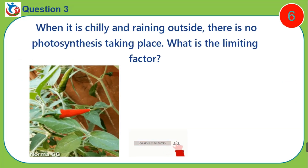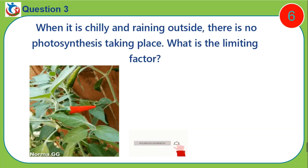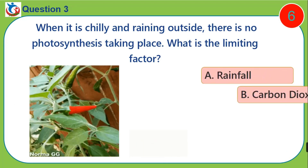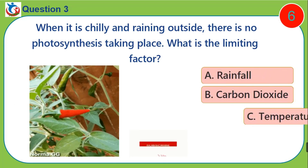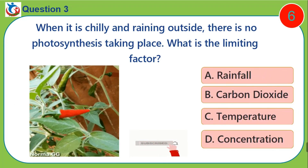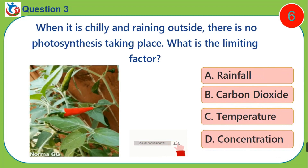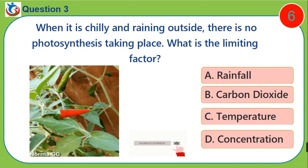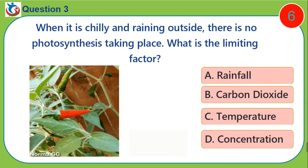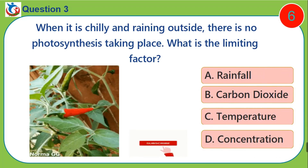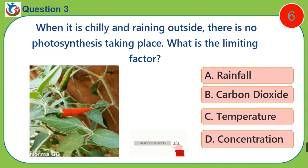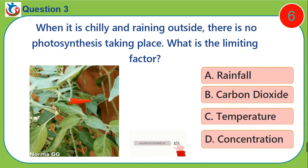Question three: When it is chilly and raining outside, there is no photosynthesis taking place. What is the limiting factor? A) rainfall, B) carbon dioxide, C) temperature, D) concentration.